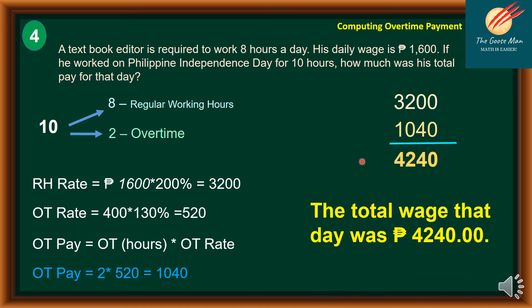To summarize: 3,200 pesos for the first 8 regular working hours plus 1,040 pesos for overtime equals a total of 4,240 pesos. Therefore, the total wage that day was 4,240 pesos.